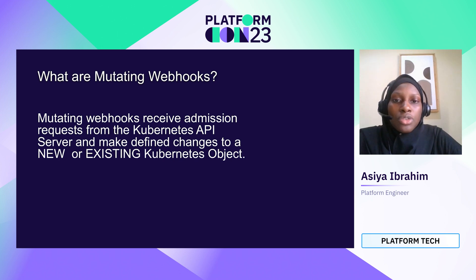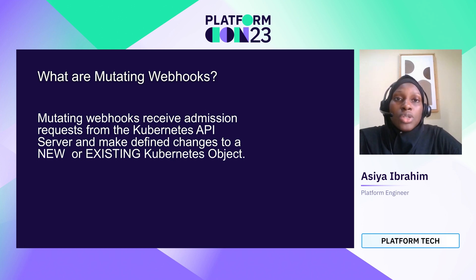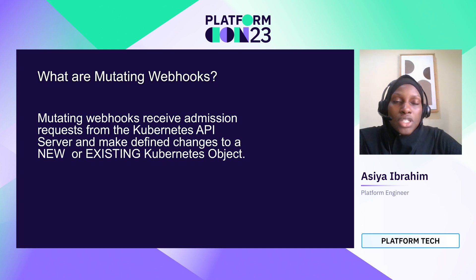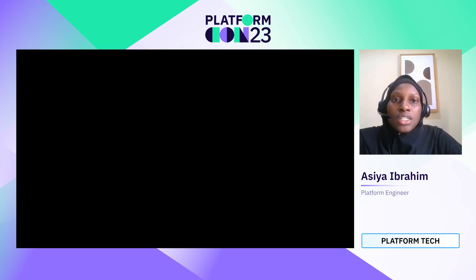The mutating webhook receives admission requests from the API server and then makes the defined changes to a new or existing Kubernetes object. You could have a Kubernetes resource that has been on the cluster for a long time, and then maybe you want to recreate it. Once it's been recreated, the mutating webhook will check to see that a particular label exists on that resource and then patch the resource with the appropriate label.